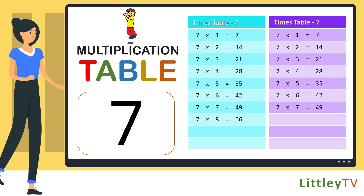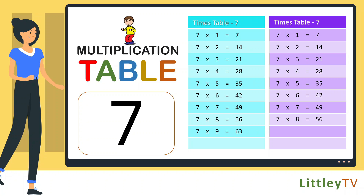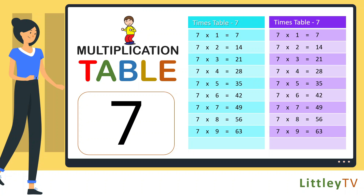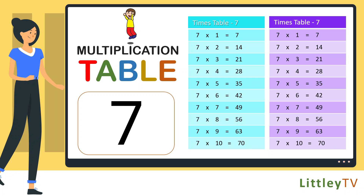7 eights are 56, 7 nines are 63, 7 tens are 70.